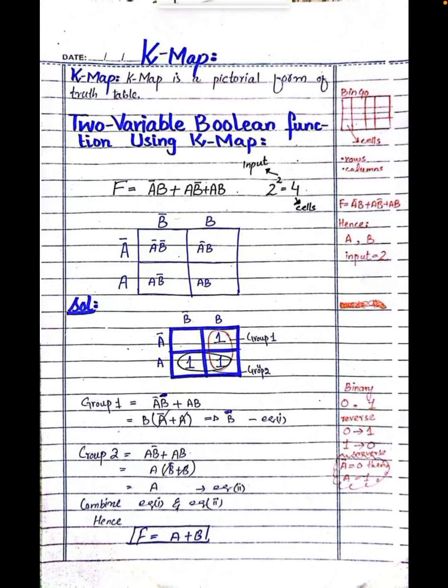Assalamu alaikum, welcome to my YouTube channel. Today we will learn about KMAP. What is KMAP? KMAP is a pictorial form of truth table and it consists of square boxes called cells.